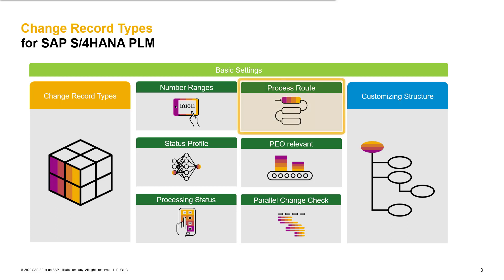The fourth point is the decision of which kind of workflow you want to use. To have the latest functionalities available, we recommend using the process route. With the process route, you can use sequential and parallel tasks as well as templates, which can be manually or automatically loaded. The alternative would be a so-called flexible workflow, which can also be set at the change record type level.